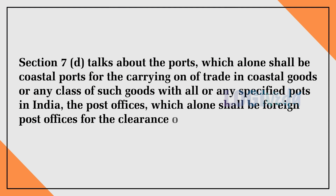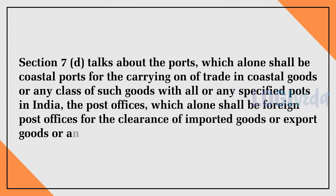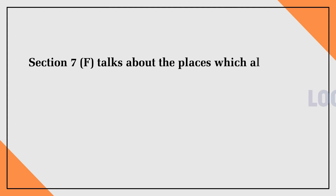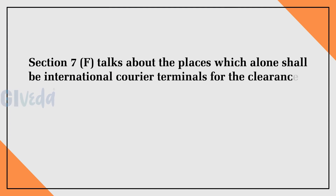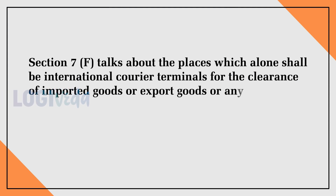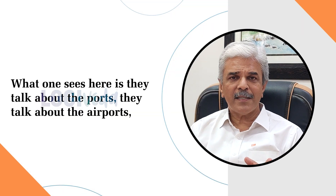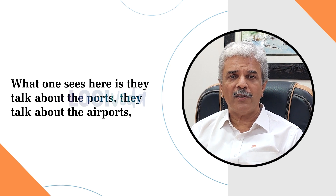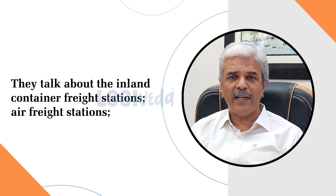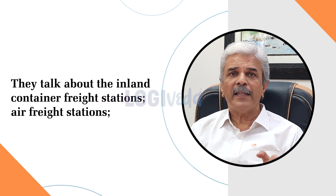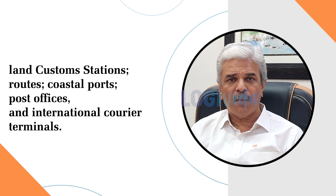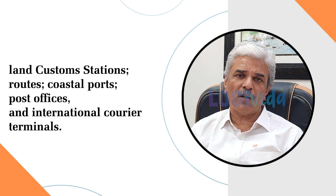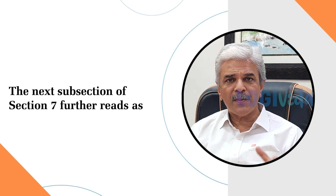Section 7f talks about the places which alone shall be international courier terminals for the clearance of imported goods or export goods or any class of such goods. So in summary, Section 7 covers: ports, airports, inland container freight stations, air freight stations, land customs stations, routes, coastal ports, post offices, and international courier terminals.